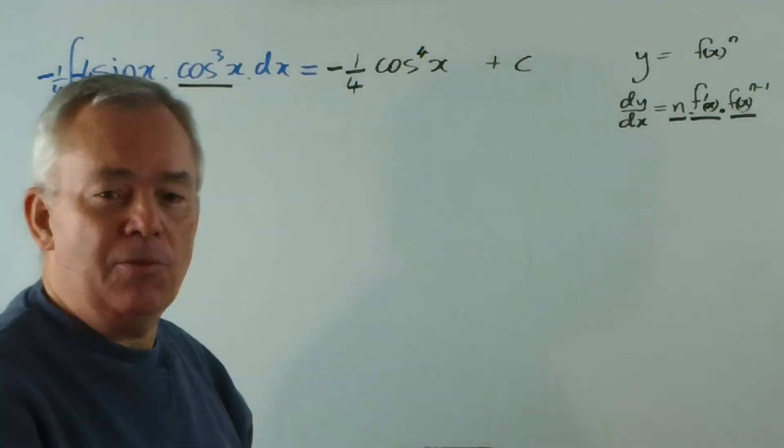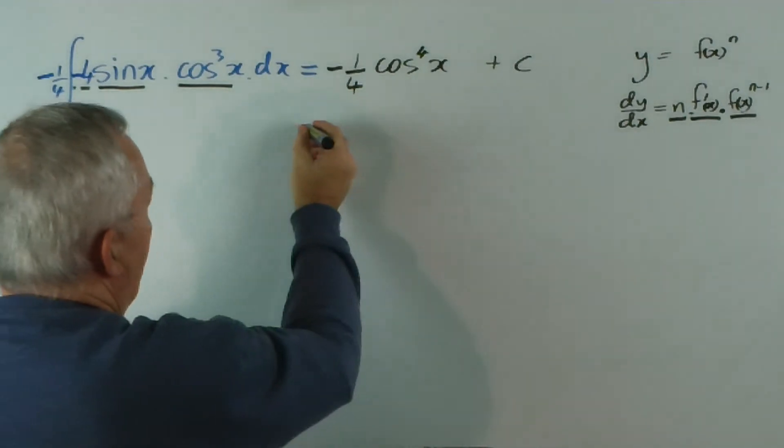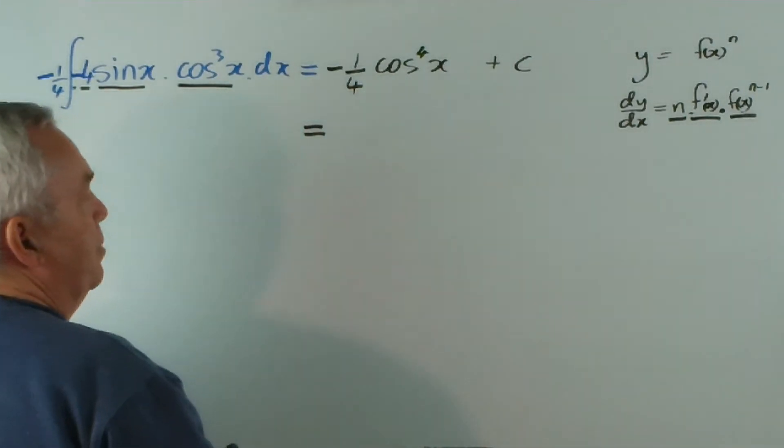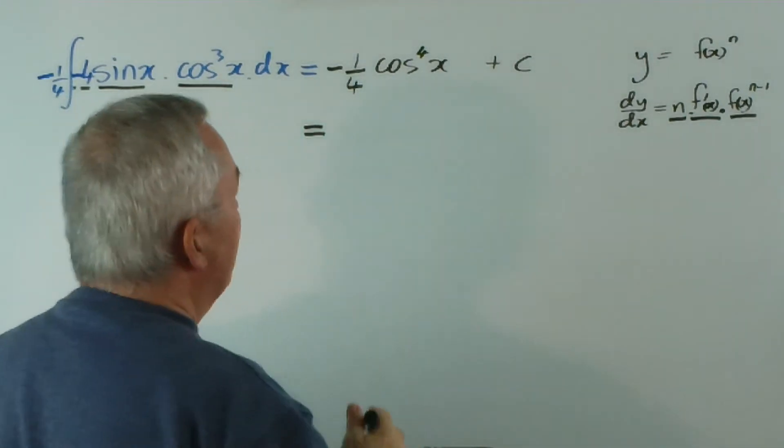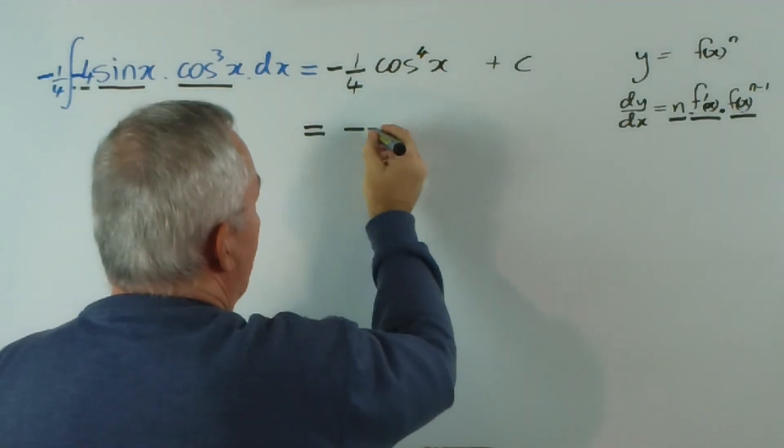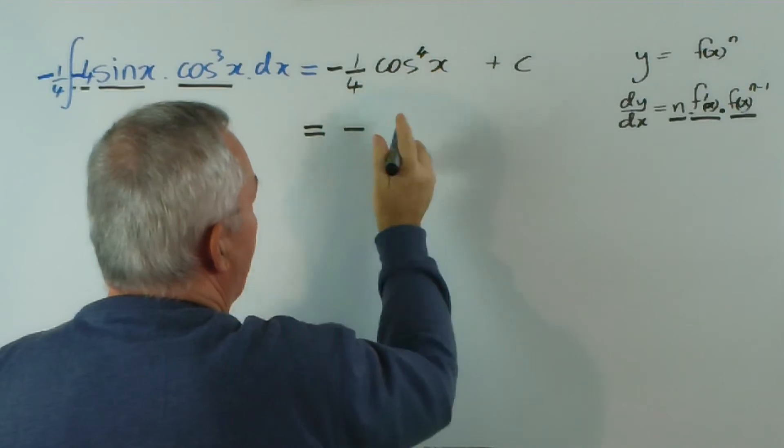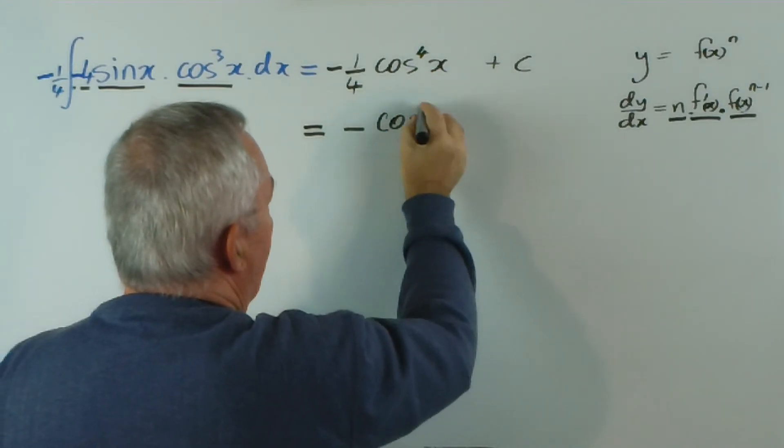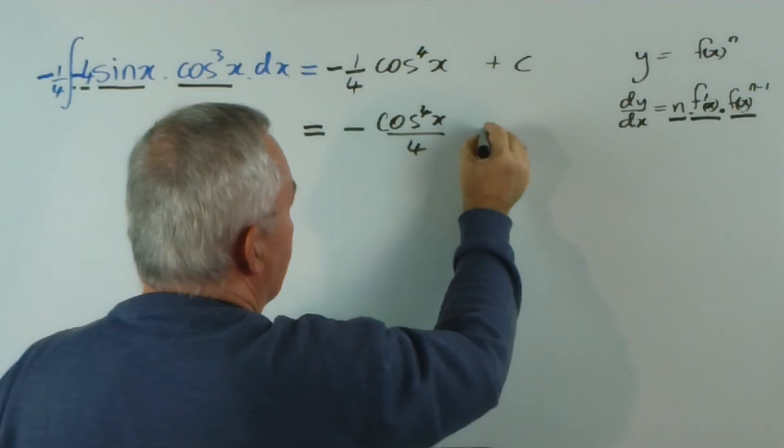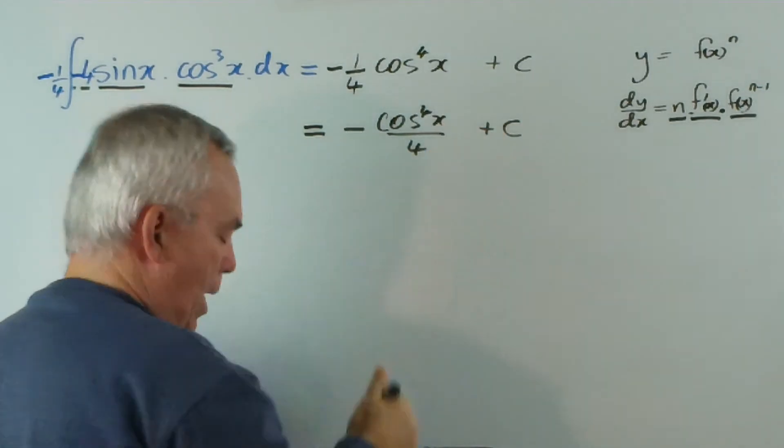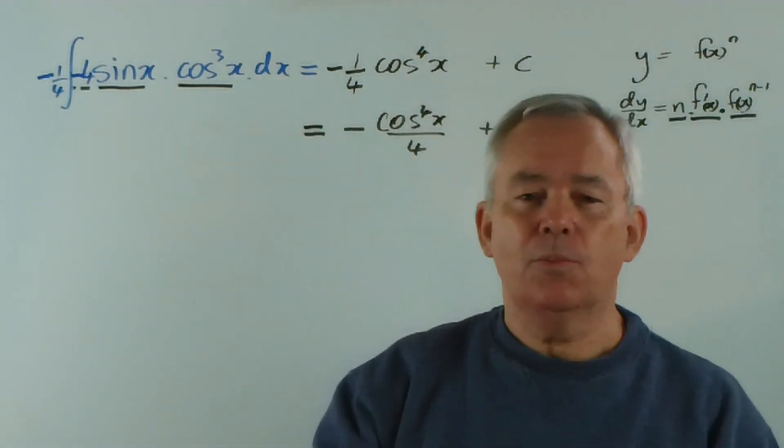Anyway, it's finished. That was very quick. And if we tidied it up, a lot of people would prefer to combine the fraction with the function to get cosine to the four x over four plus c. Both are good and acceptable answers, depending on your preference.